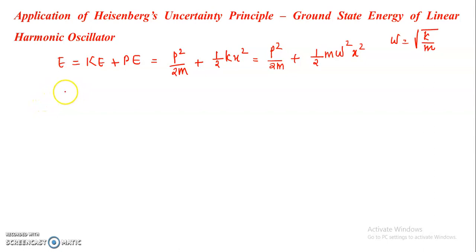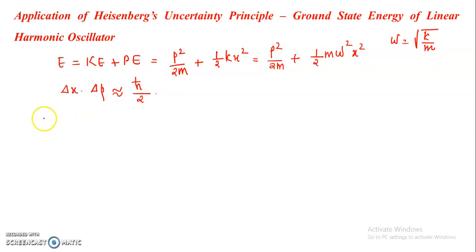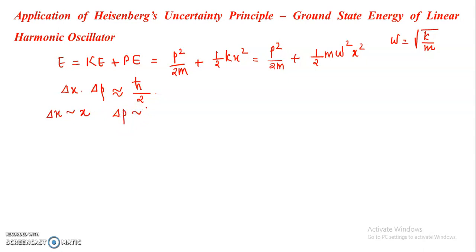The position-momentum uncertainty principle is Δx · Δp ≈ ħ/2. In order to simplify the problem, we are taking the uncertainty in position Δx approximately equal to x, and the uncertainty in momentum Δp approximately equal to p.